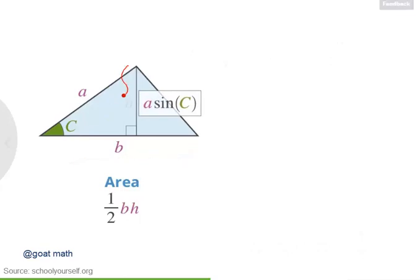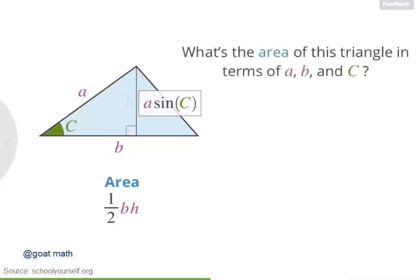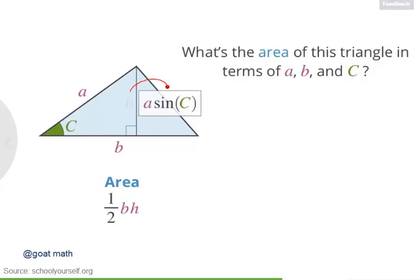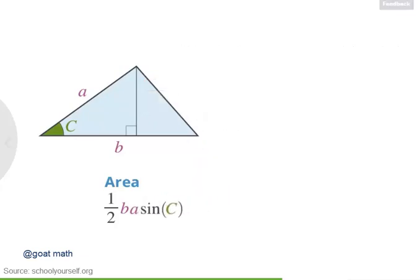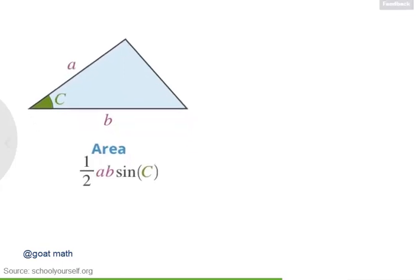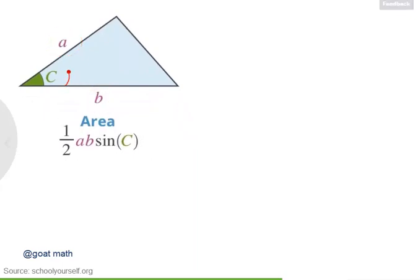At this point, you know the base and height of this triangle. So what's its area, in terms of the side lengths a and b, and the angle c? Right, earlier you said the area of this triangle was 1 half base times height, and you also found the height was a times the sine of c. So plugging this expression in for the height gives us a new formula for the area of our triangle. We're multiplying all these terms together so their order doesn't matter. Let's just put the a in front of the b so the side lengths are in alphabetical order. And there you have it. If you know two side lengths of a triangle and the measure of the angle between those two sides, then the area of that triangle is 1 half times the length of one side times the length of the other side times the sine of the angle between them.